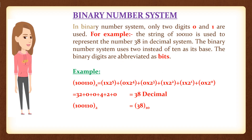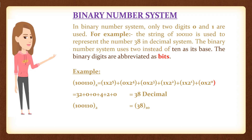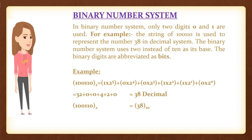In binary number system, only two digits 0 and 1 are used. For example, the string 1110 is used to represent the number 38 in decimal system. The binary number system uses 2 instead of 10 as its base. The binary digits are abbreviated as bits.